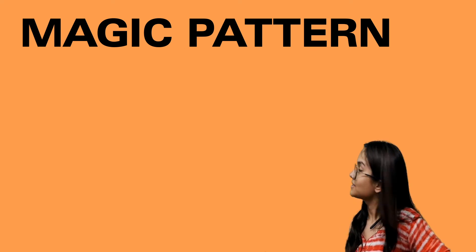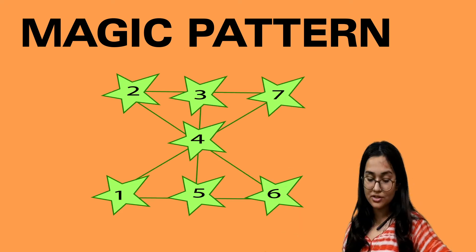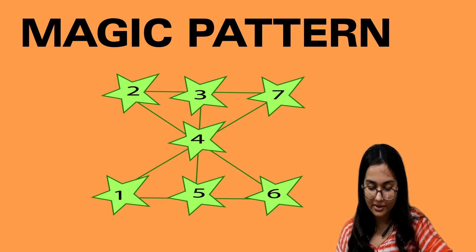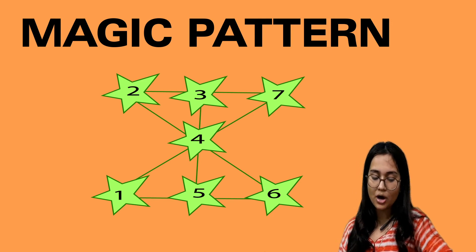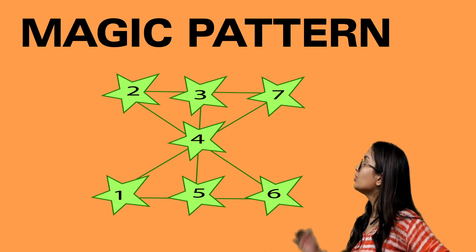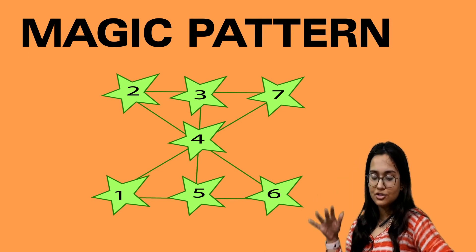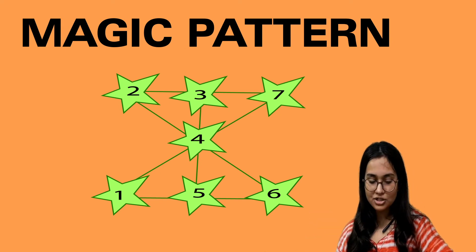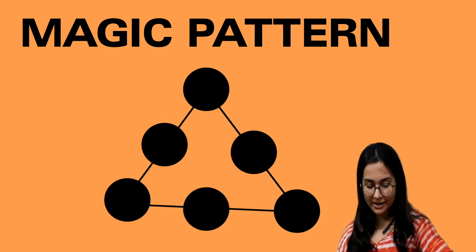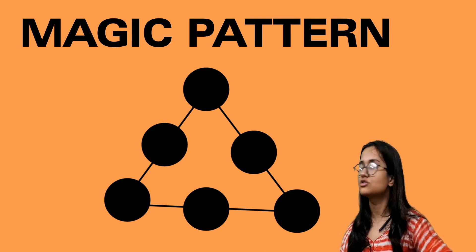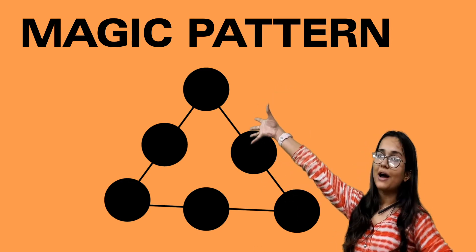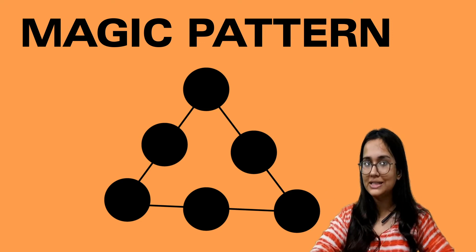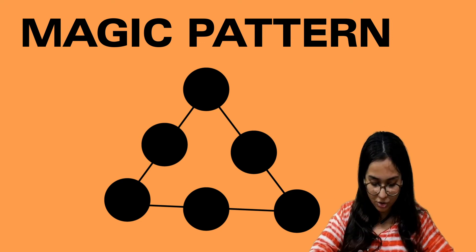Then we have magic patterns. Look at the pattern of numbers 1 to 7 and see how each line adds up to 12. You need to create your own pattern like this. After this we also have magic triangles, which follow the same type of pattern, and you need to create your own magic triangle. These are practice questions for you.